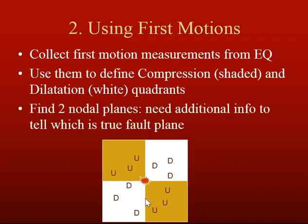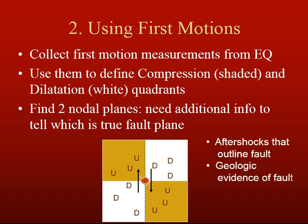That means there are then two nodal planes, where you go from one kind of motion to the other. You still need additional information to tell which one of these is the true fault plane. Either one of these can be the true fault plane if you just have up and down motions — you can't tell. But a lot of times aftershocks help outline the fault, and you also have geologic evidence. Both are used to make informed decisions about which of the two nodal planes is the correct fault plane.